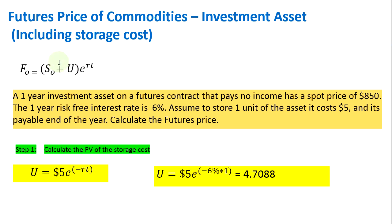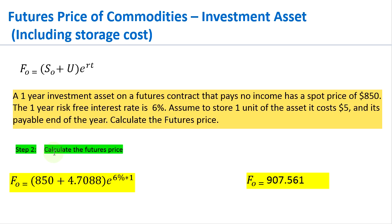Once we calculate the present value of the storage cost, we can plug the numbers into the formula. Step two: calculate the futures price. The spot price is eight hundred and fifty dollars, and the present value of the storage cost is four dollars and seventy cents. We add those two together and multiply by e^(0.06 × 1), which gives us nine hundred and seven dollars and fifty-six cents.